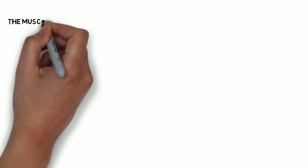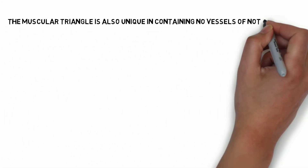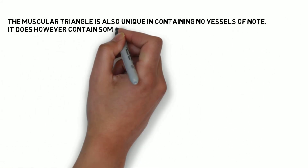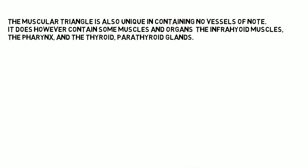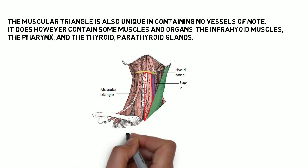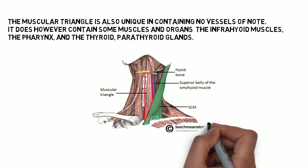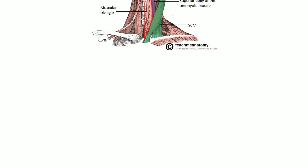The muscular triangle also has the unique feature of containing no vessels of note. It does however contain some muscles and organs, like the infrahyoid muscles, the pharynx, and the thyroid and parathyroid glands. I hope this video helps you.